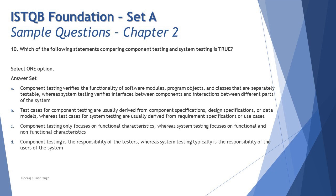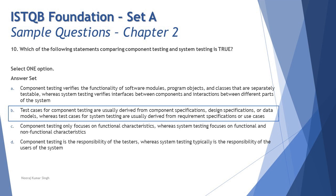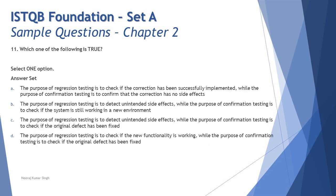Component and integration testing can include some non-functional testing. Option D: component testing is the responsibility of the tester whereas system testing is typically the responsibility of the users of the system — this is wrong. Users conduct alpha or beta testing in acceptance testing, not system testing. So the correct answer is B: test cases for component testing are derived from component or design specifications, and for system testing from requirement specifications or use cases.